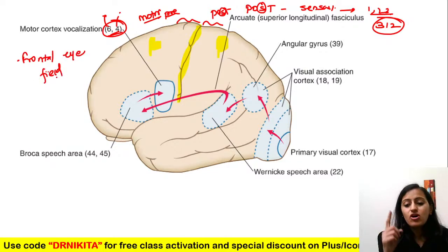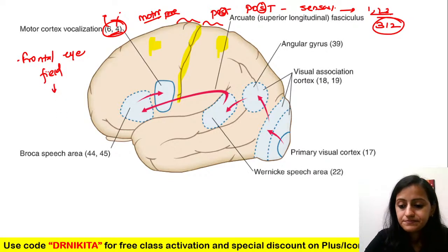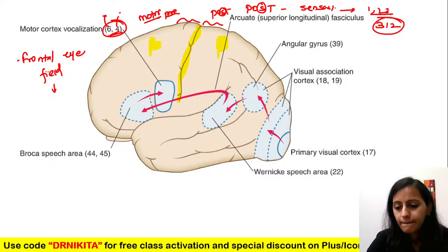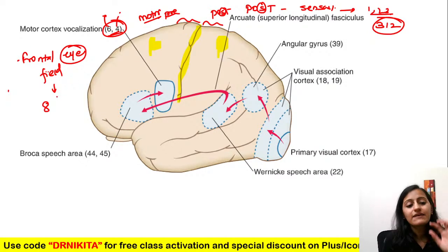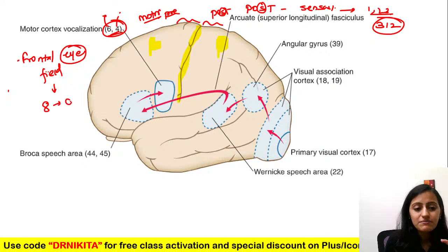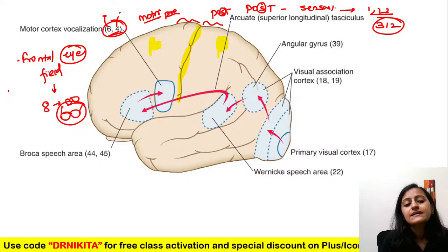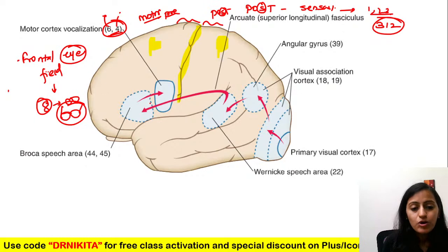Can someone tell me what Brodmann area is the frontal eye field, which controls horizontal gaze? It is Brodmann's area 8. Remember: when you write the number 8 horizontally, it looks like spectacles — eyes. So the frontal eye field is area 8.